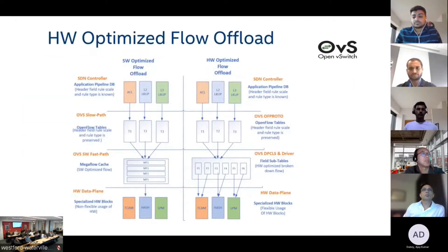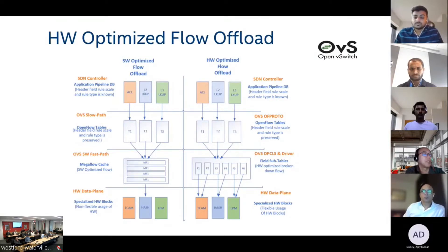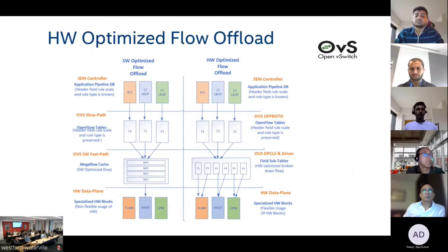In comparison, this slide on the right-hand side is showing that in the DPCLS layer or in the driver layer, if the mega flows can be divided into what we call field sub-tables, then those field sub-tables can be put into different hardware blocks. So fields that are most fitting — ones with exact matches or those with large numbers of entries — will fit best in the hash tables. And the ones that have masks, those entries would fit best in the TCAM. So certain dimensioning and optimization of these entries is required.